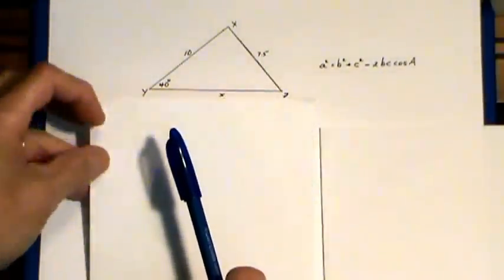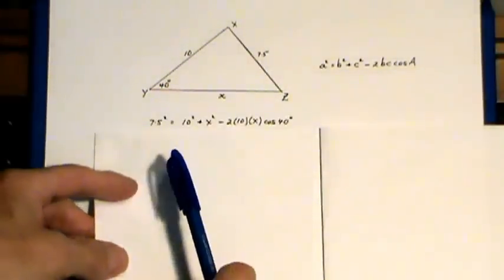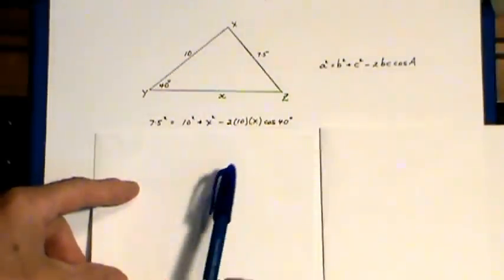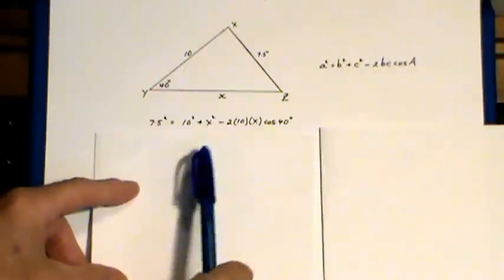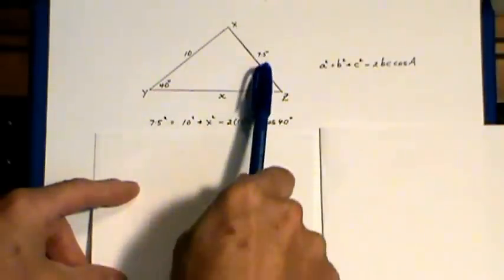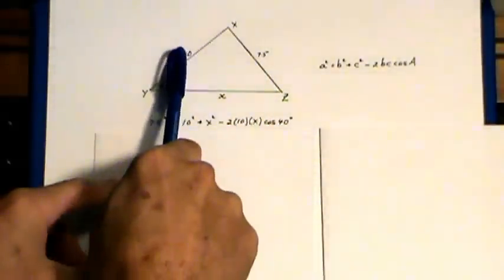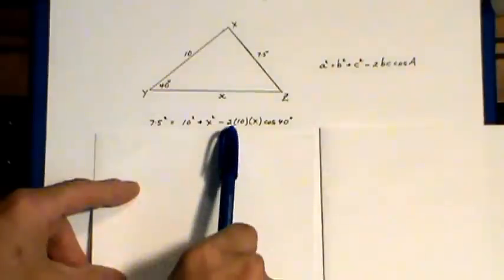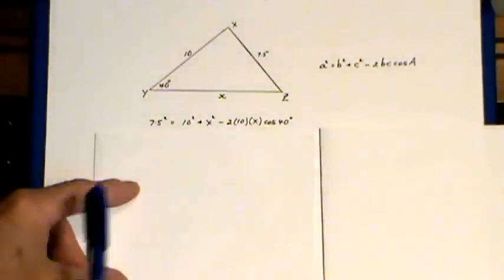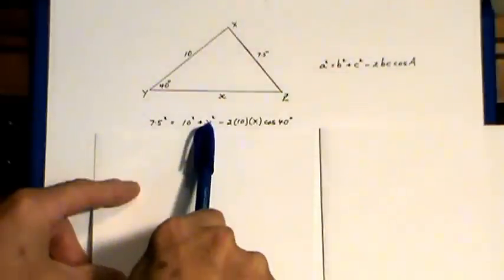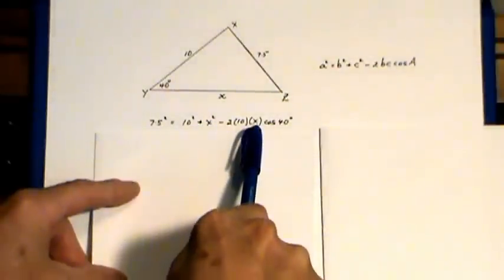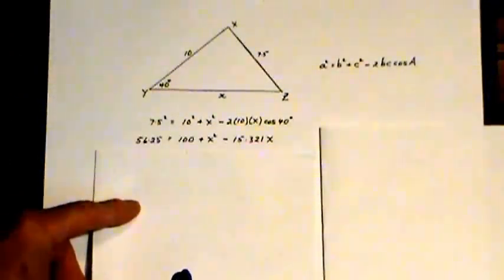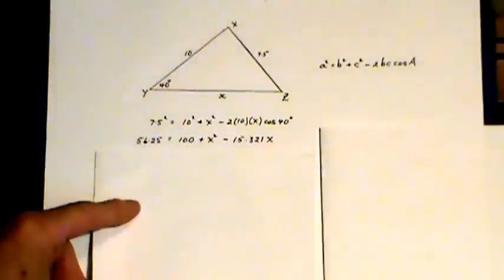This is what the setup would look like. We have to start with the 7.5 in order to involve the cos 40 at the end. So 7.5 squared equals these two sides squared added together, and that's the rest of it. Now you see you have an x squared here and an x there, so what we're heading for is a quadratic equation.